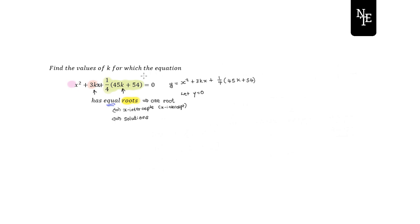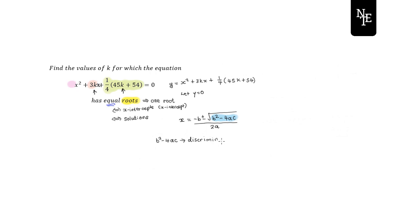We can find x-intercepts using the quadratic formula: x = (−b ± √(b² − 4ac)) / 2a. The expression underneath the square root — b² − 4ac — is called the discriminant, represented by the Greek letter delta (a triangle symbol). The discriminant determines the type of x-intercepts we will have.